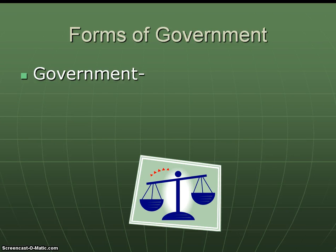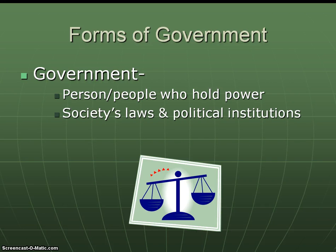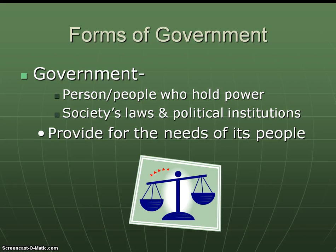Up next is government. Government is made up of two basic groups: it can be a single person or people who hold power — like legislators, mayors, and the president — but it can also be made up of all of our laws and political institutions, such as the Supreme Court and the Bill of Rights. The purpose of government is to provide for the needs of its people, whether through protection via laws, police forces, and the army, or assistance such as food stamps for people who need it.